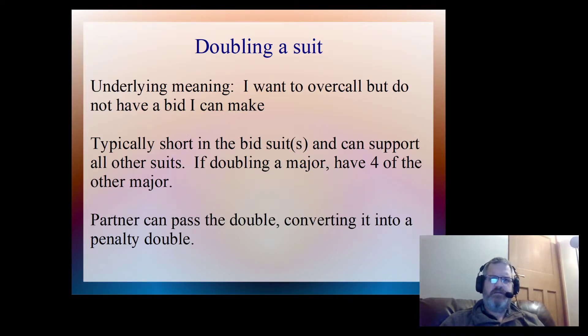So if we think about those two different types of bids that we do the double for, we're either too strong to overcall or we're short in the suit, which means we don't have a five card suit of our own but we're trying to find that fit with partner. That's where the underlying meaning of 'I want to overcall but I don't have a bid that I can make' comes into play. And once we understand that that's the underlying meaning behind the double, behind that takeout double, that means that we can identify when there's an exception.